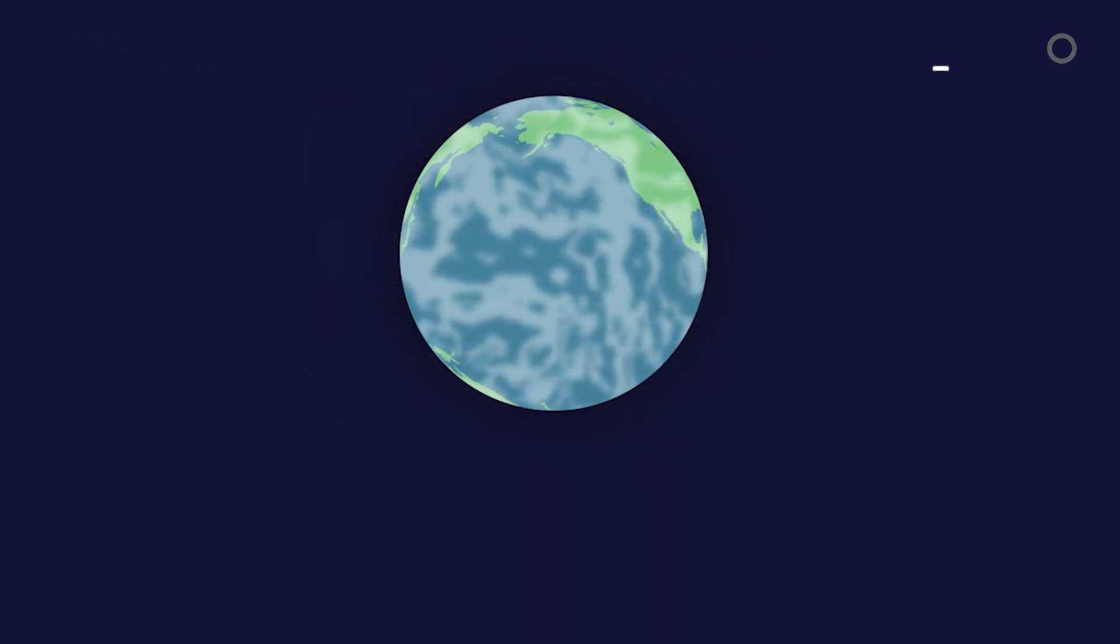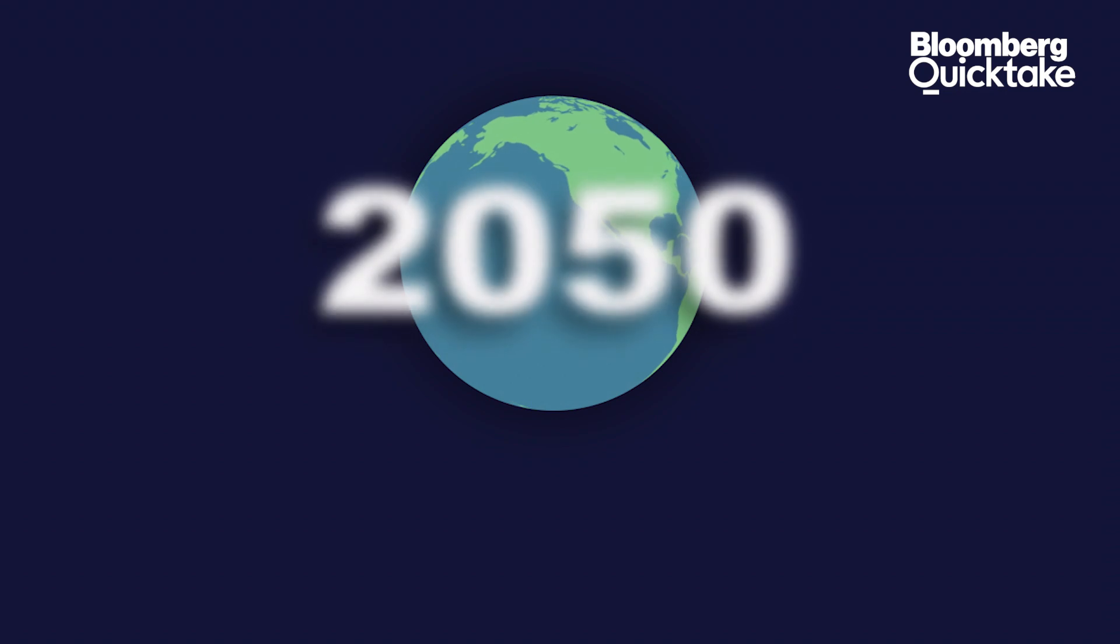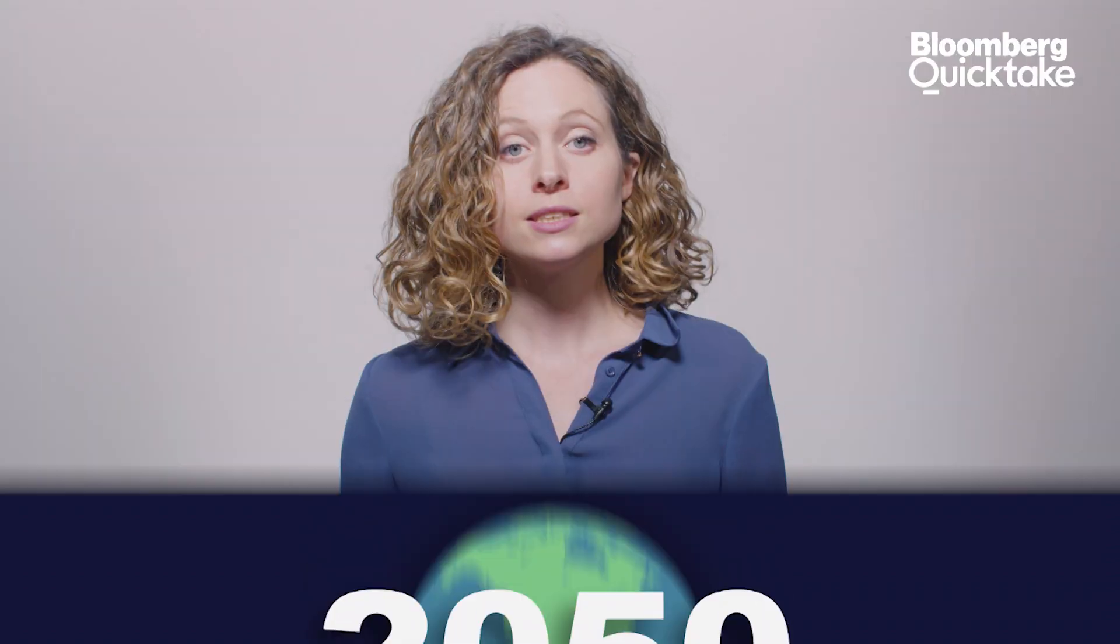Scientists say the world needs to reach net zero emissions by 2050. Some nations, like Bhutan, have already met their goal decades early. But others are dragging their heels, particularly those whose economies rely on oil and gas, such as Russia and Saudi Arabia.